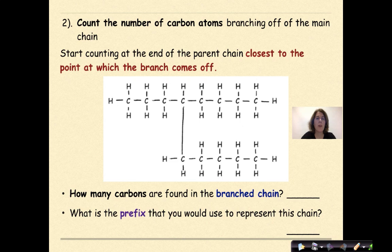The next thing that you want to do is to count the number of carbon atoms branching off the main chain. So start counting at the end of the parent chain closest to the point at which the branch comes off. So where's the branch? Well, this is the branch right here. And if you remember beforehand, I started counting the carbons where this was carbon 1, 2, 3, 4, 5, 6, 7, 8, 9, 10.